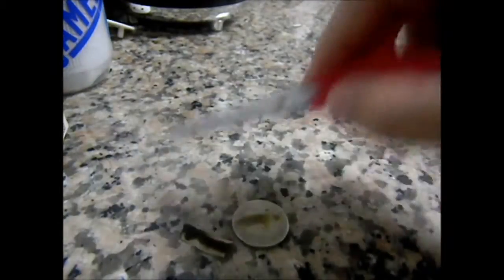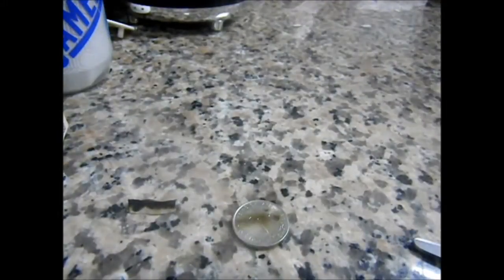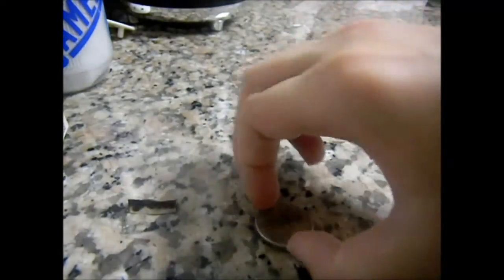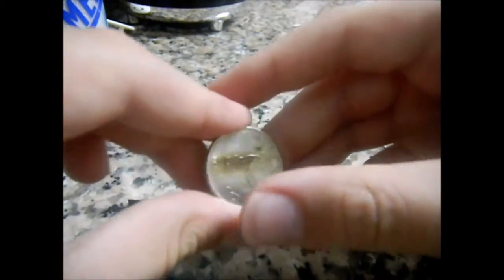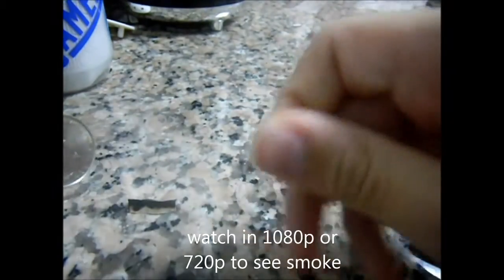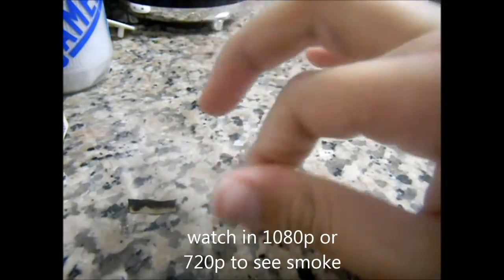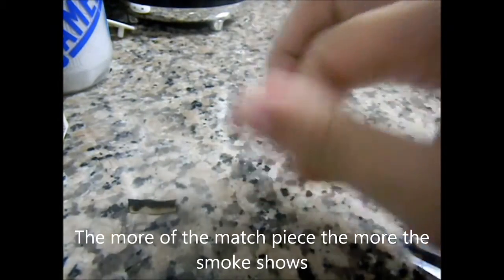So now you take that stuff off. And after that you want to hold your coin, wipe that off, and then as you can see smoke is coming out when you rub your finger.